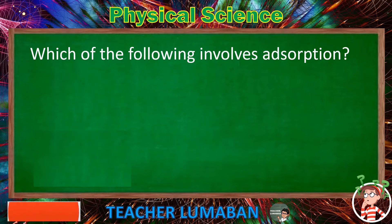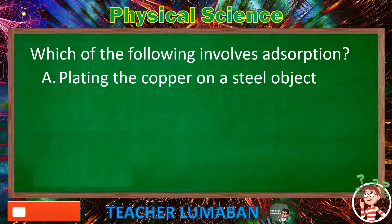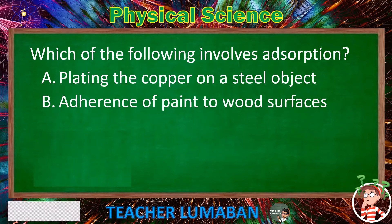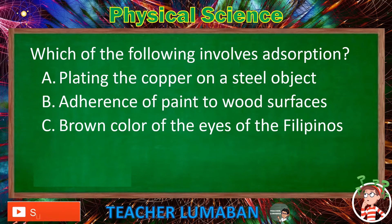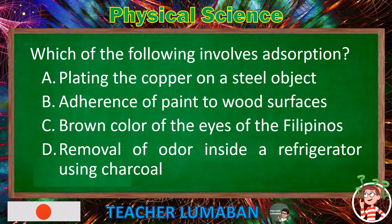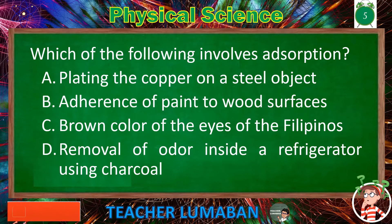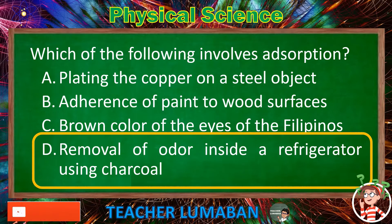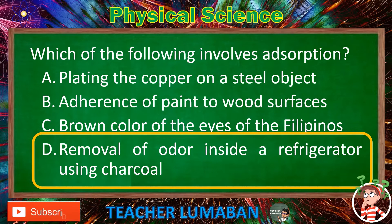Which of the following involves adsorption? Letter A: plating the copper on a steel object. Letter B: adherence of paint to wood surfaces. Letter C: brown color of the eyes of the Filipinos. Letter D: removal of odor inside a refrigerator using charcoal. The correct answer is Letter D. The removal of odor inside a refrigerator using charcoal involves adsorption.